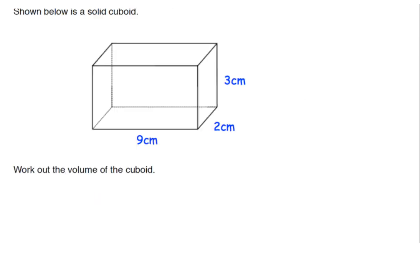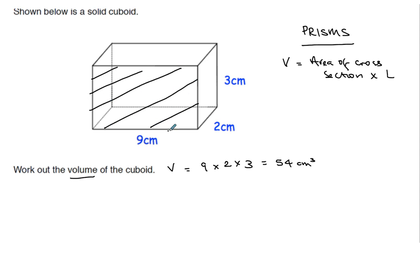And a cuboid, again, is basically the same. So the volume is just 9 times 2 times 3 equals 54 centimetre cubed. Cubes and cuboids are just prisms. So when we're doing the volume of a prism, you just do the volume equals the area of the cross-section times the length or the height. So you're taking the area of the cross-section, which is the 9 times 3, and then multiplying it by the length of 2.